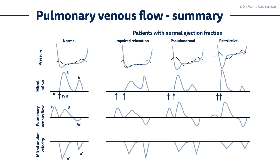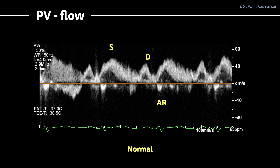Hello, it's Dr. Macho for heart and lungs focused ultrasound. In the next image, I want to show you a pulmonary venous flow signal. You have the systolic flow, denoted with S, the diastolic flow, denoted with D, and the AR time. This is a normal situation.